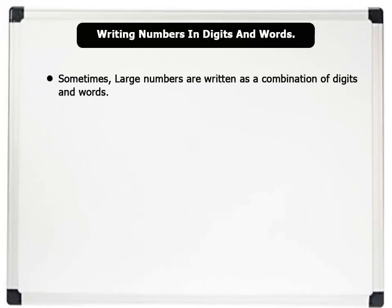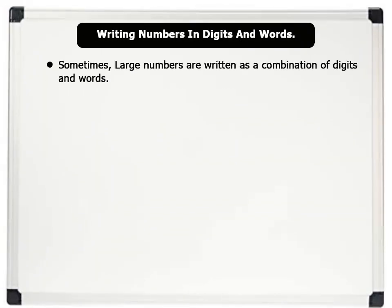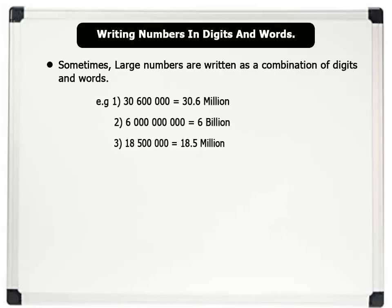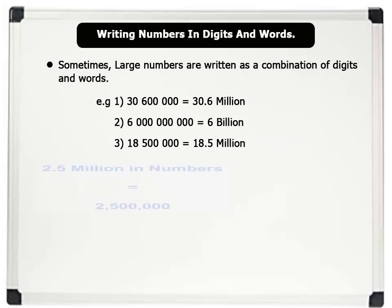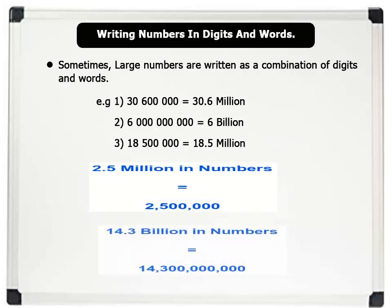Sometimes large numbers are written as a combination of digits and words. For example, the following large numbers can be pronounced as thirty point six million, six billion, and 18.5 million. Also, 2.5 million and 14.3 billion can be written in full numbers as shown on the board.